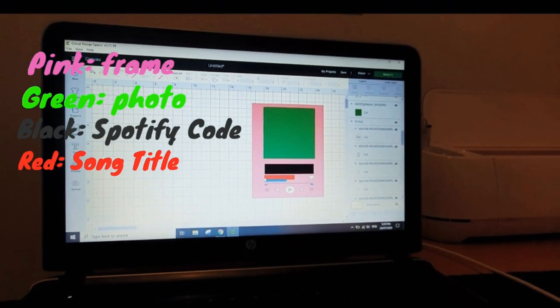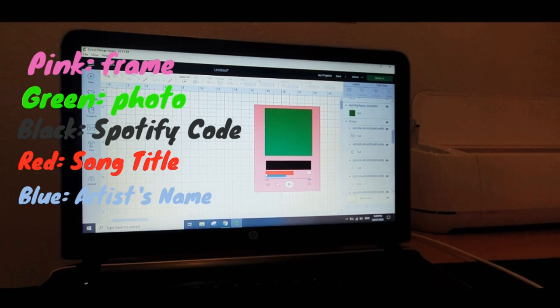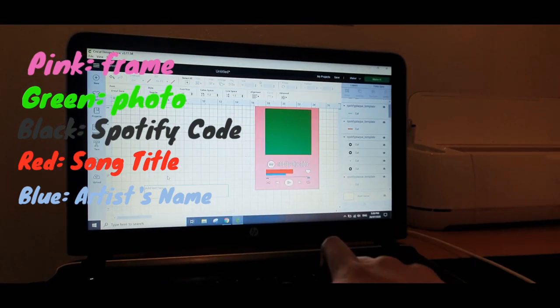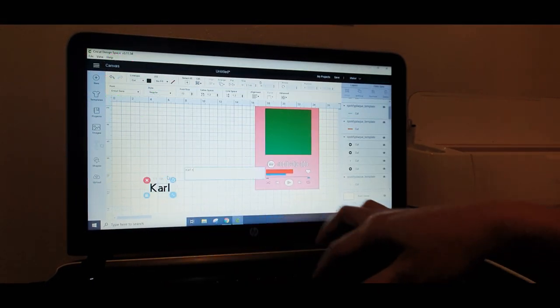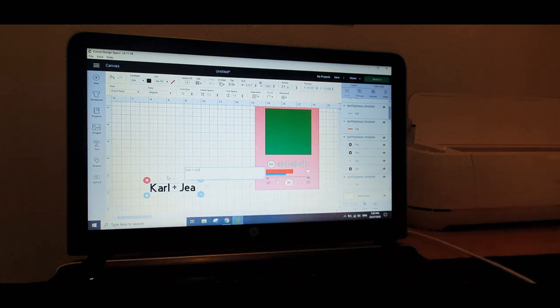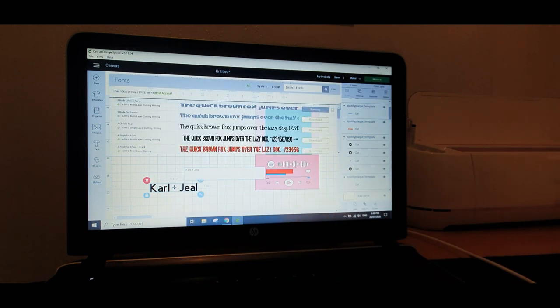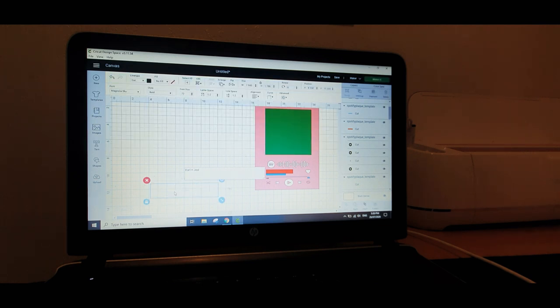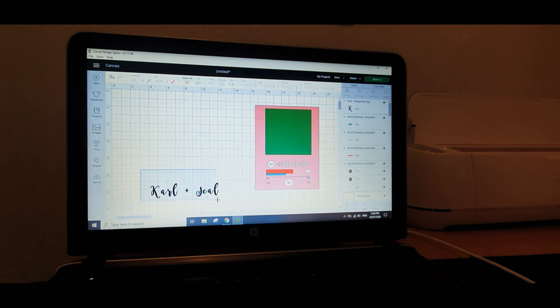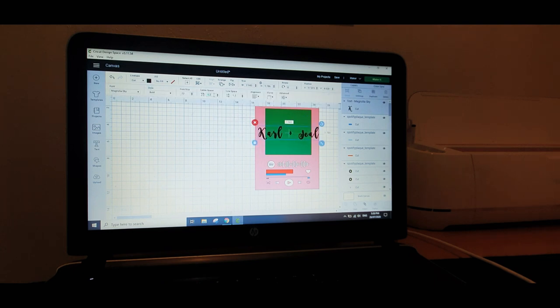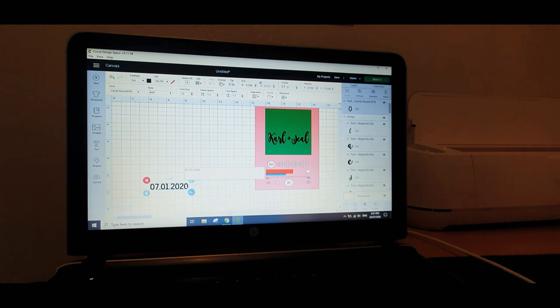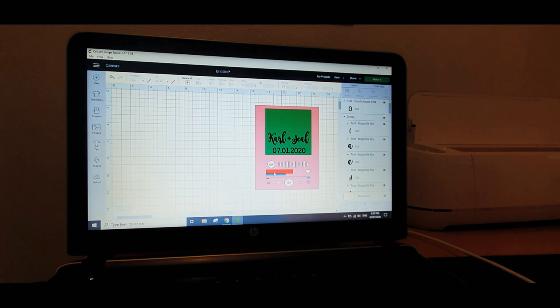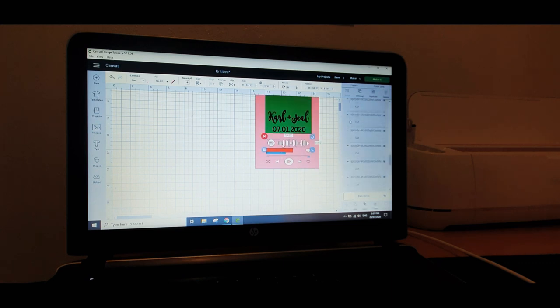You can start by adding the names and the date. So for this project I want to put it on top of the photo, so I'll adjust it according to the size of the photo which is in this case the green box. And then just change the font spacing and the letter size based on your liking. And if you're happy then just go for it.